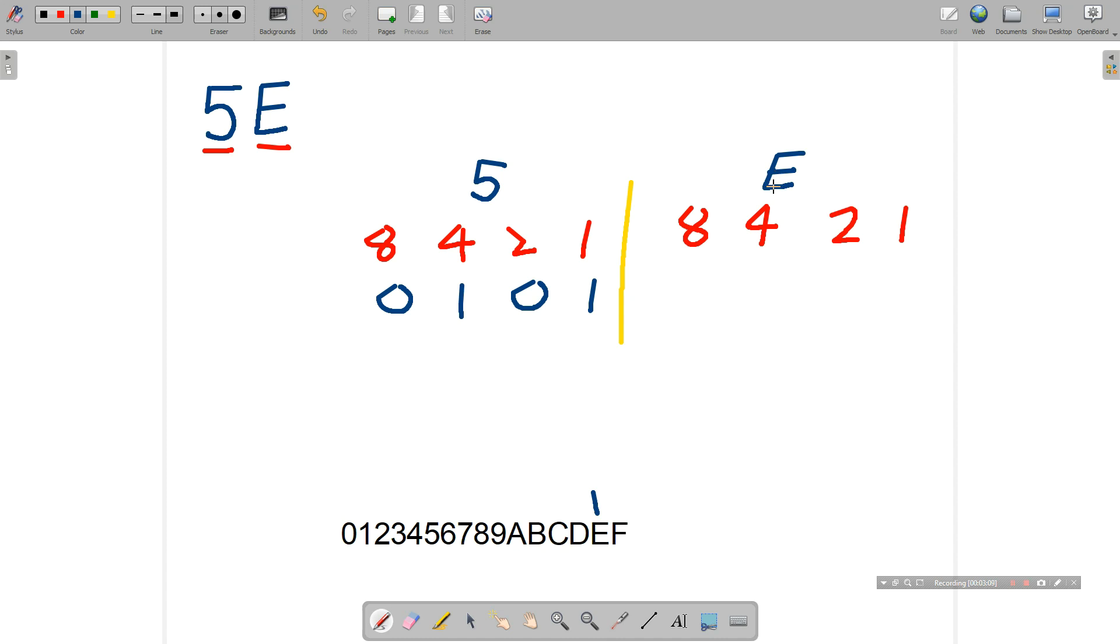How do we make 14? Well, the 8, the 4, and the 2 together add up to 14. Let's fill in the 0 in the column we don't need. So 5 is 0101 and E is 1110.